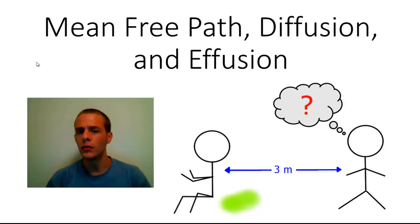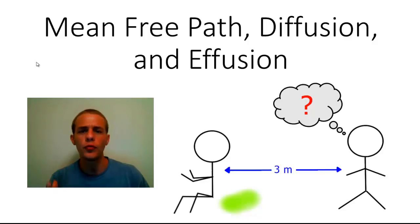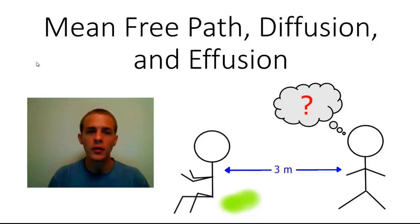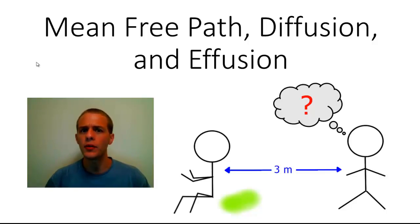The fart is silent, so you're not aware that he has farted until you smell it. But the peculiar thing is that it actually takes a couple of seconds from the time your roommate farts to the time you actually smell it. In my last video we talked about root mean square velocity, which you can think of as basically just an average speed of gas particles, and we found that the average speeds are measured in hundreds of meters per second at atmospheric pressure.